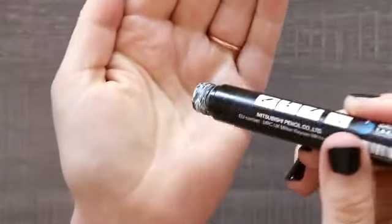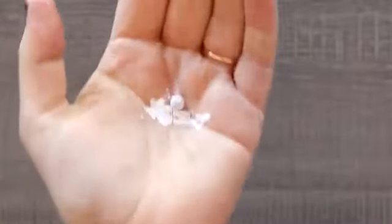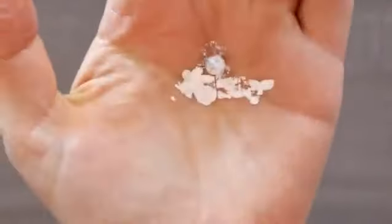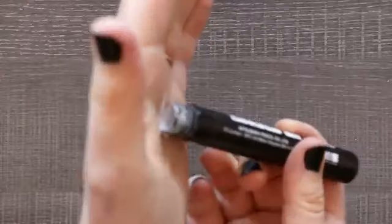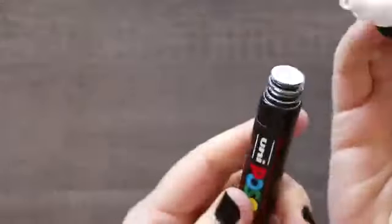To refill your Posca pen simply unscrew the top of the marker. Inside you will find the empty barrel and the ball inside that shakes up the paint. I love seeing what's inside our supplies so this was a really fun step. But we're going to want to keep that ball inside. Make sure to give your paint refill a good shake then fill it up.